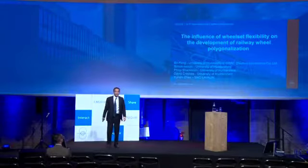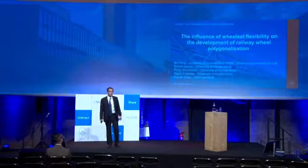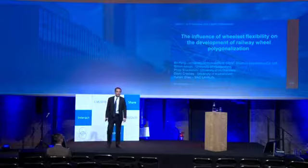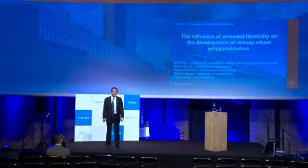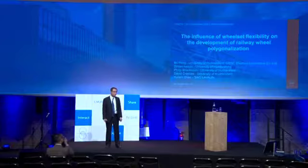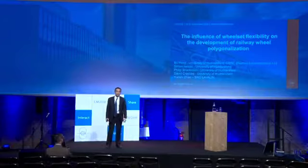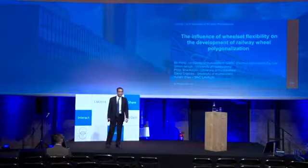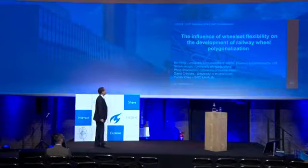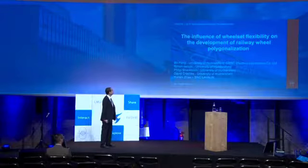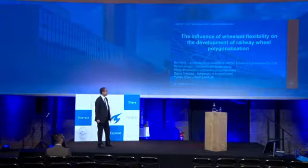Good afternoon, everyone. My name is Bob Heng. I'm a staffer in the CIRC and I'm now doing PhD research at the University of Huddersfield in the UK. My topic is about the influence of wheelset flexibility on the development of railway vehicle wheel polygonization.